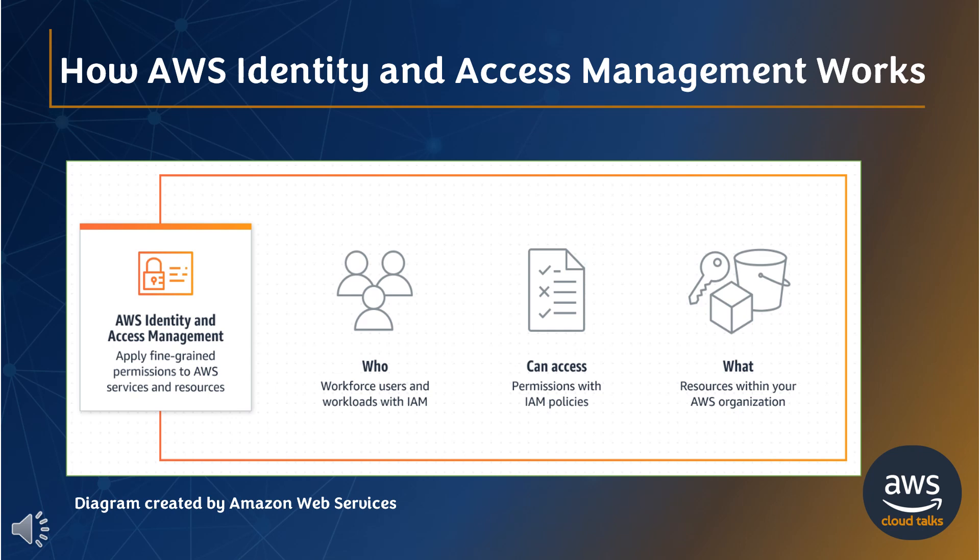Now, let's see how AWS Identity and Access Management works. With AWS IAM, you can specify who or what can access services and resources in AWS, centrally manage fine-grained permissions, and analyze access to refine permissions across AWS. The diagram illustrates how AWS IAM controls who or what can access services and resources in AWS. We recommend you read the diagram to get a better understanding.